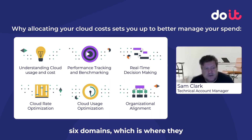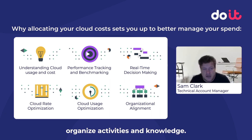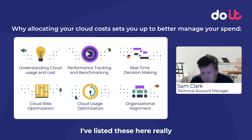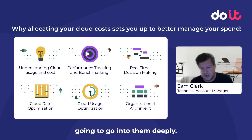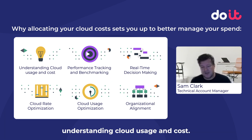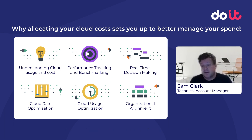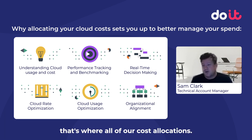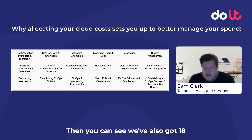As we go in, we see that there are six domains, which is where they organize activities and knowledge. I've listed these here really briefly because we're not going to go into them deeply. You can see only one of them is called understanding cloud usage and cost. It would make sense that you expect that's where all of our cost allocation is.